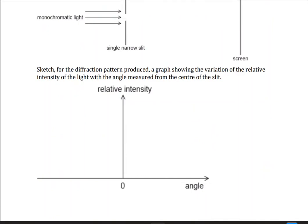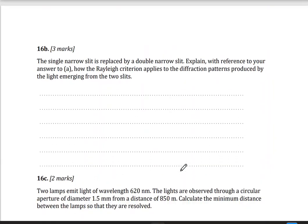Since here we have a single slit, so we have central maximum here, and the first maximum and other small maximum, here minimum, and then maximum, other small maximum.